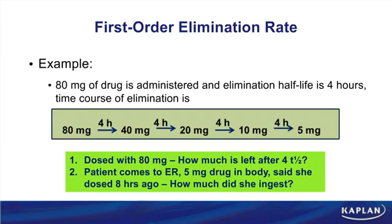Here's an example for first-order elimination. We start with 80 milligrams, and the half-life of this drug is four hours. Every four hours the levels are cut in half: 80 down to 40, 40 to 20, 20 to 10, then 10 down to 5 milligrams. The amount lost per period changes — 40, then 20, then 10, then 5 milligrams — so the amount is varying. But the rate is the same: a constant fraction is eliminated, with drug levels being cut in half each time period.